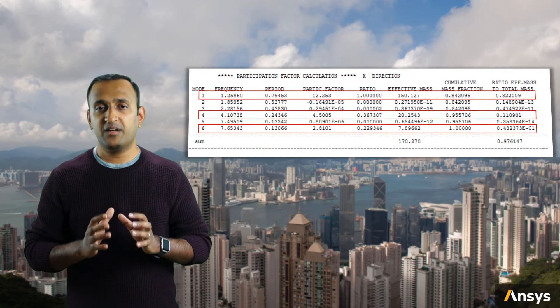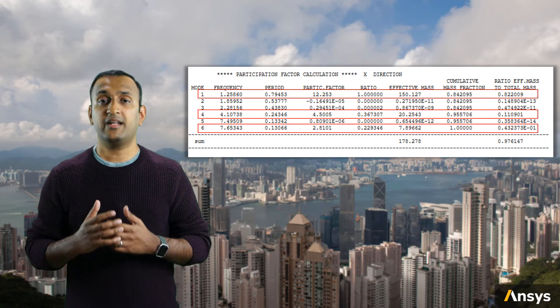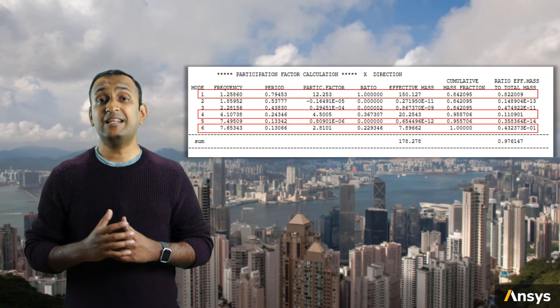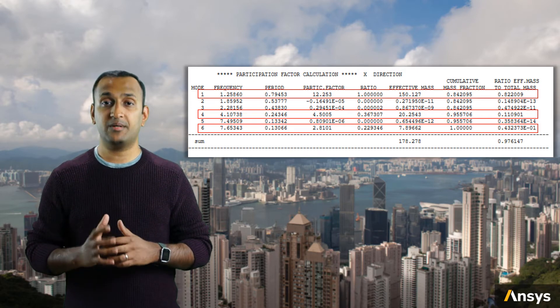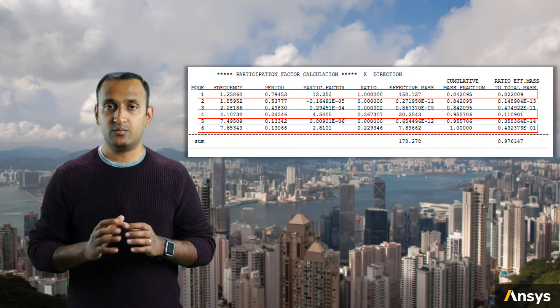Now let's try to fix this issue by using dampers. But before we do that, let's perform a modal analysis to identify the potential locations where dampers can be installed. After we solve for the mode frequencies, we'll first identify the significant modes. From this table, concentrating on the effective mass ratios, we can see that three modes are contributing to 97% of the total effective mass, so let's concentrate on these modes and see how and where the kinetic energy is stored in the system.